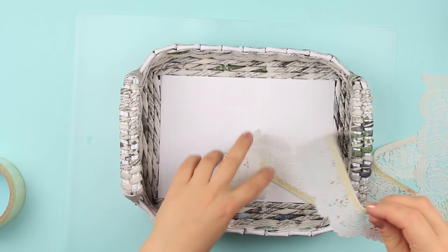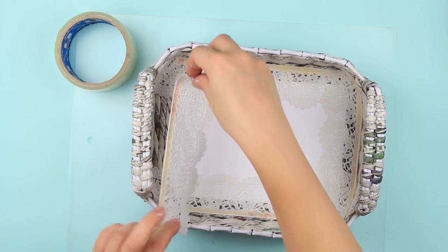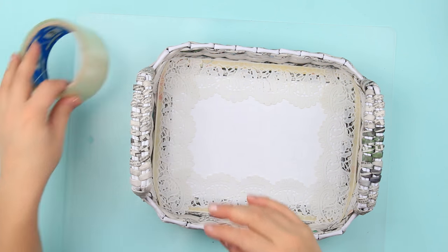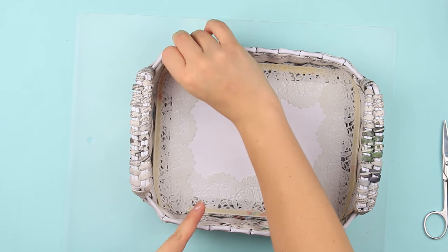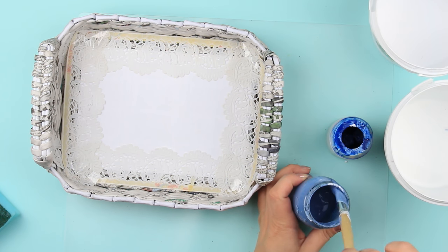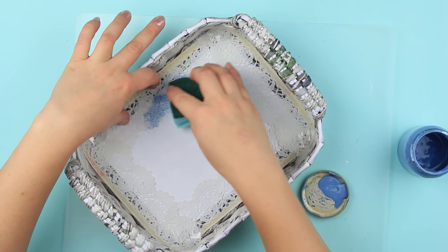When the tray is dry, attach a lace stencil to the bottom. Use tape. Add blue gouache to the ground. Touch the stencil with the blue paint using a sponge.